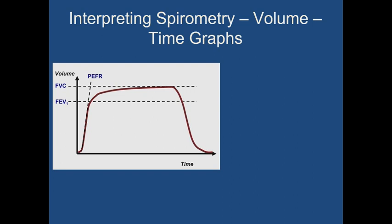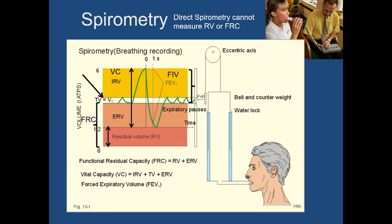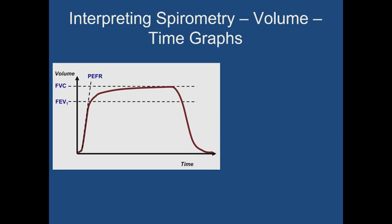A modern spirogram doesn't look like the old bell-and-counterweight traces — we flip the graph on its head. The patient takes a big deep breath in, puts their mouth around the spirometer, and blows out hard, as fast and as long as they can. This is recorded from zero up to about six seconds where the curve levels off, with time increasing along the x-axis. If a patient cannot maintain six seconds of blowing, the test is considered incomplete.